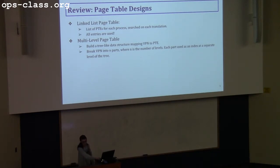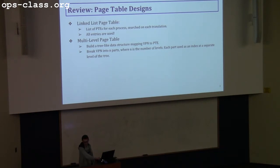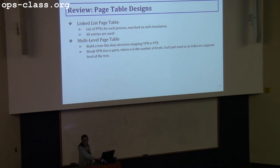We recommended using a linked list, which saves on space but is expensive on each translation, though it will get you past the 3.2 and 3.3 tests. We also talked about a multi-level page table as an option, and we recommended that in order to continue passing tests up until 3.3, you use a four-level page table.